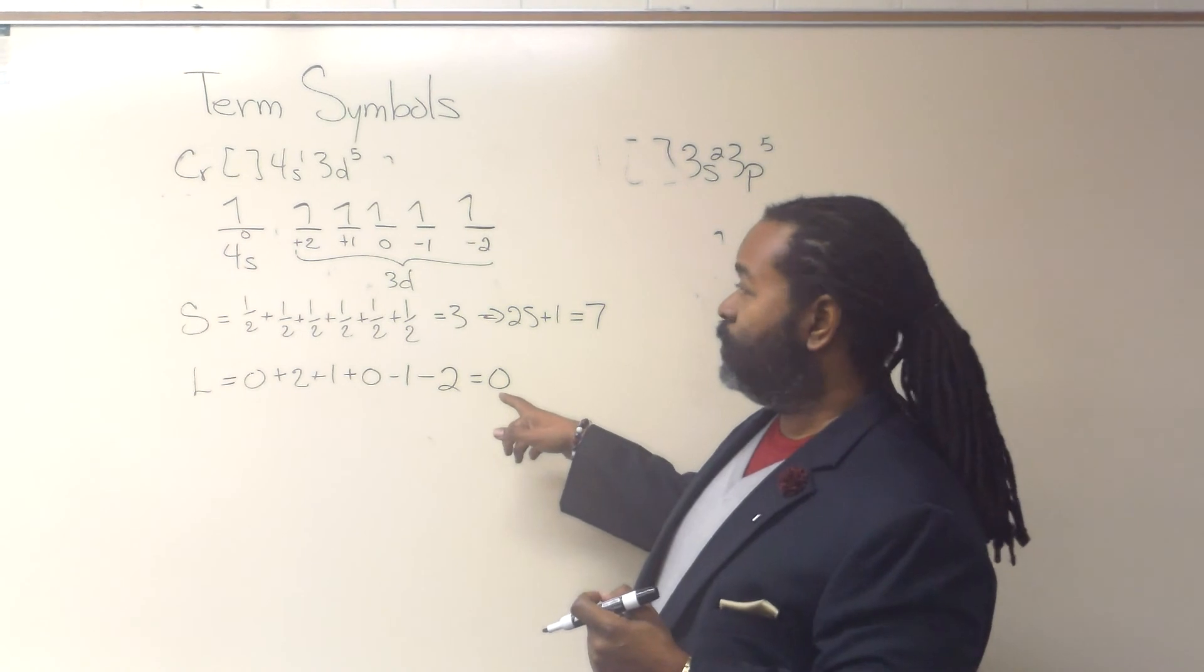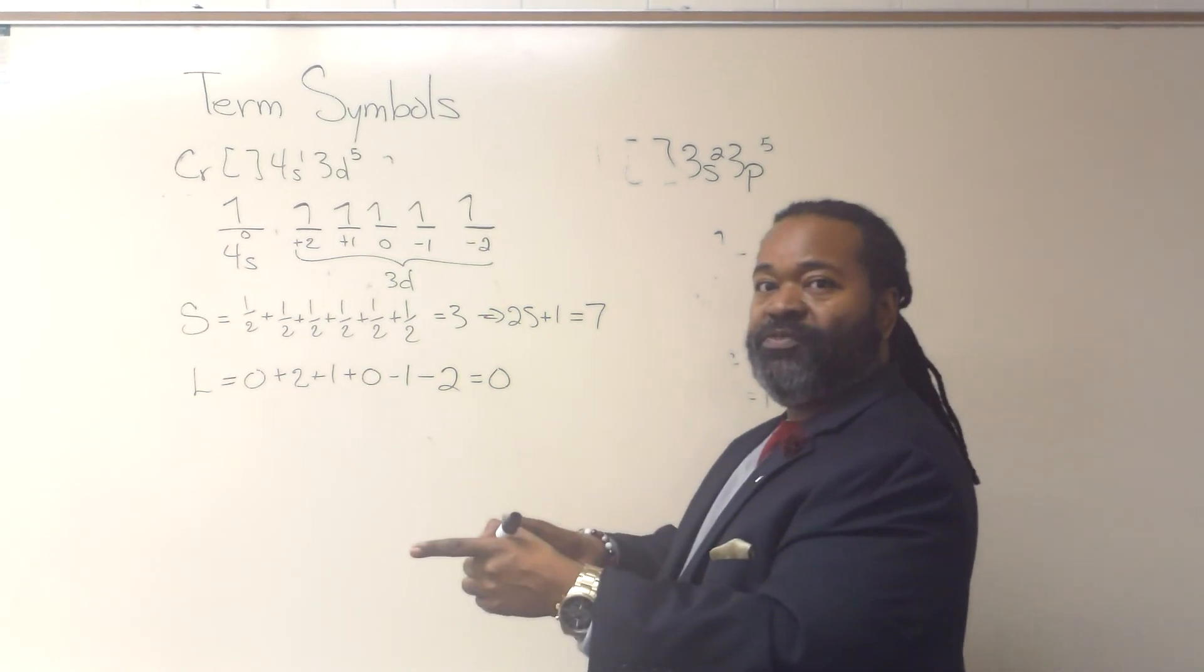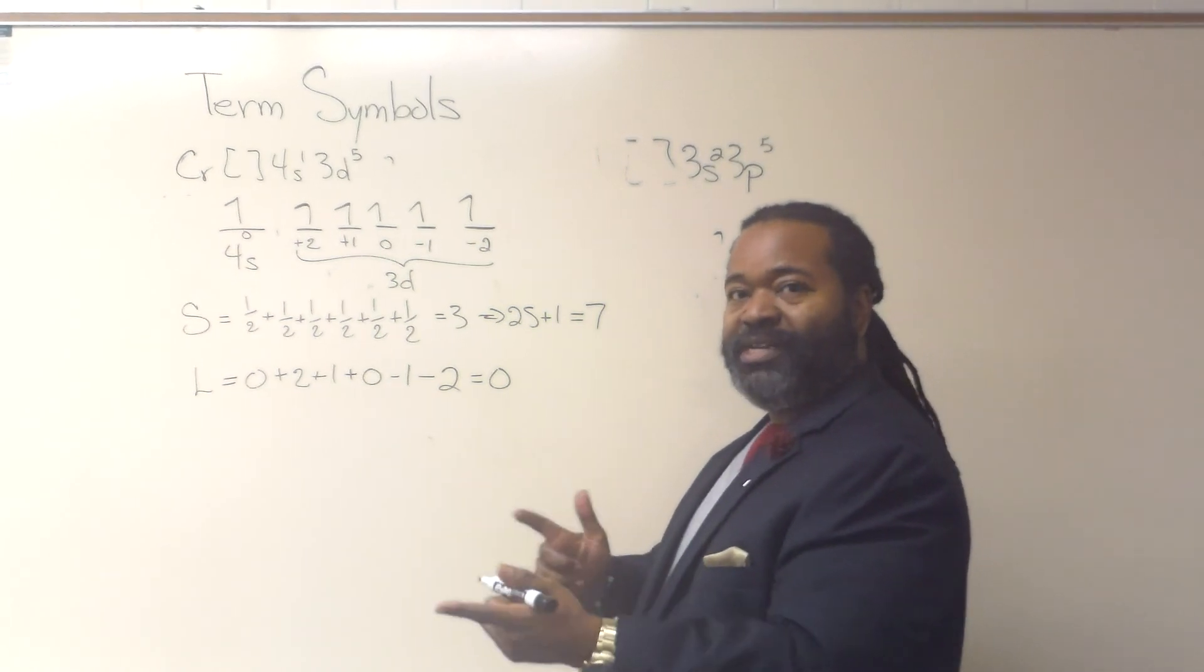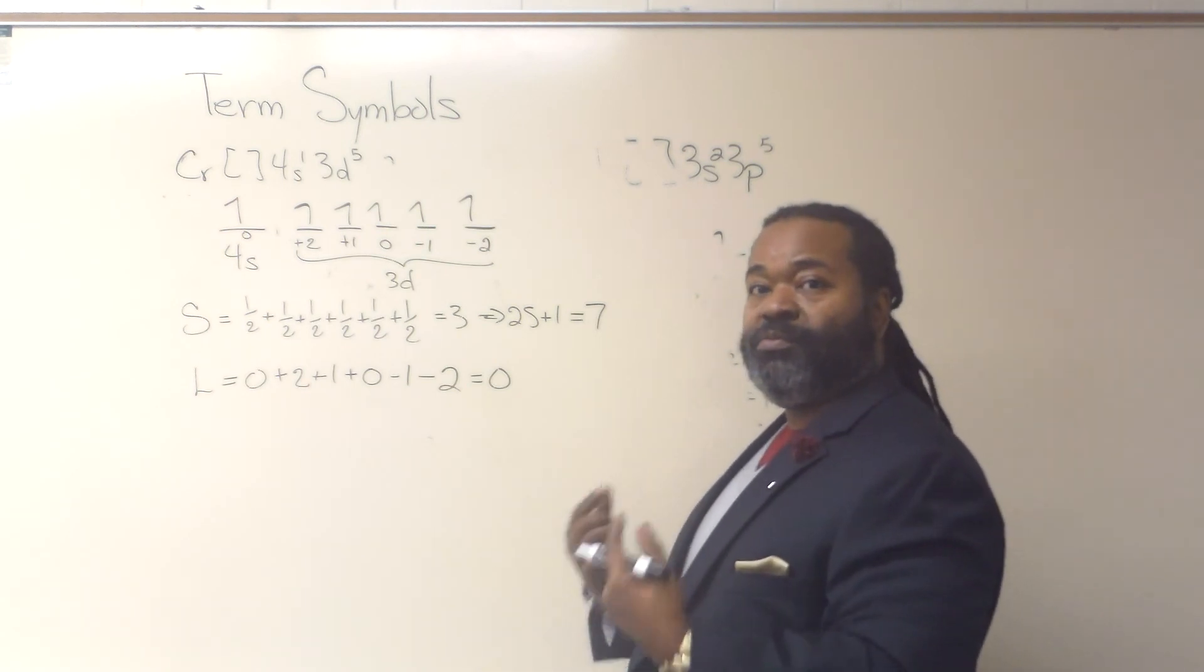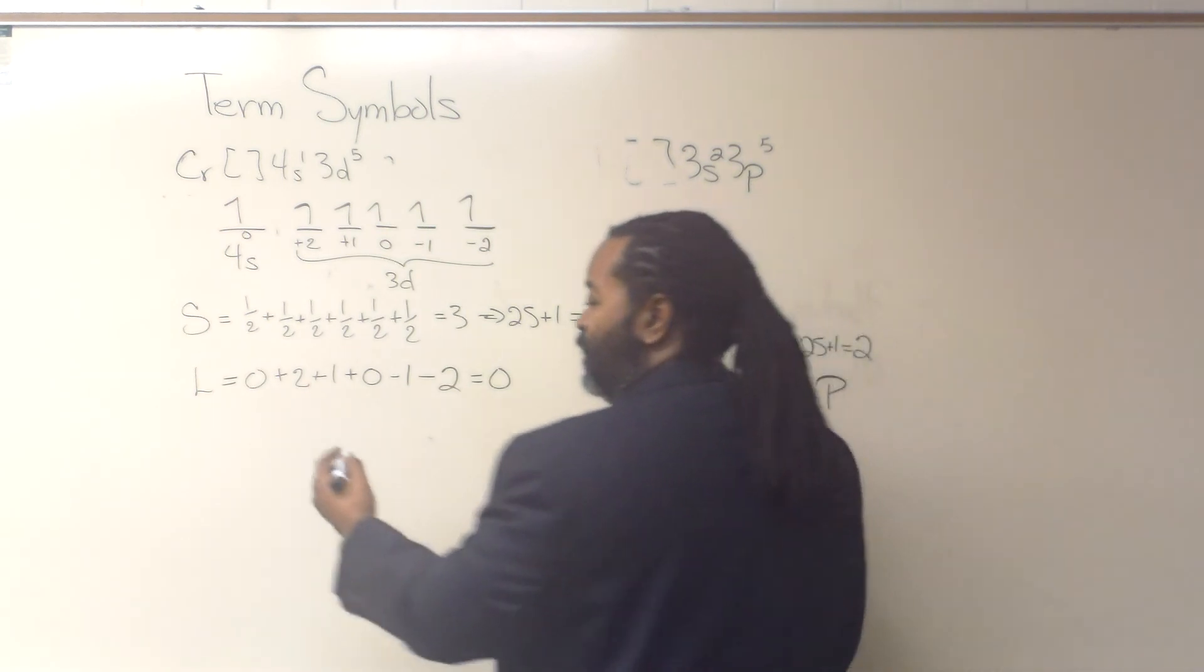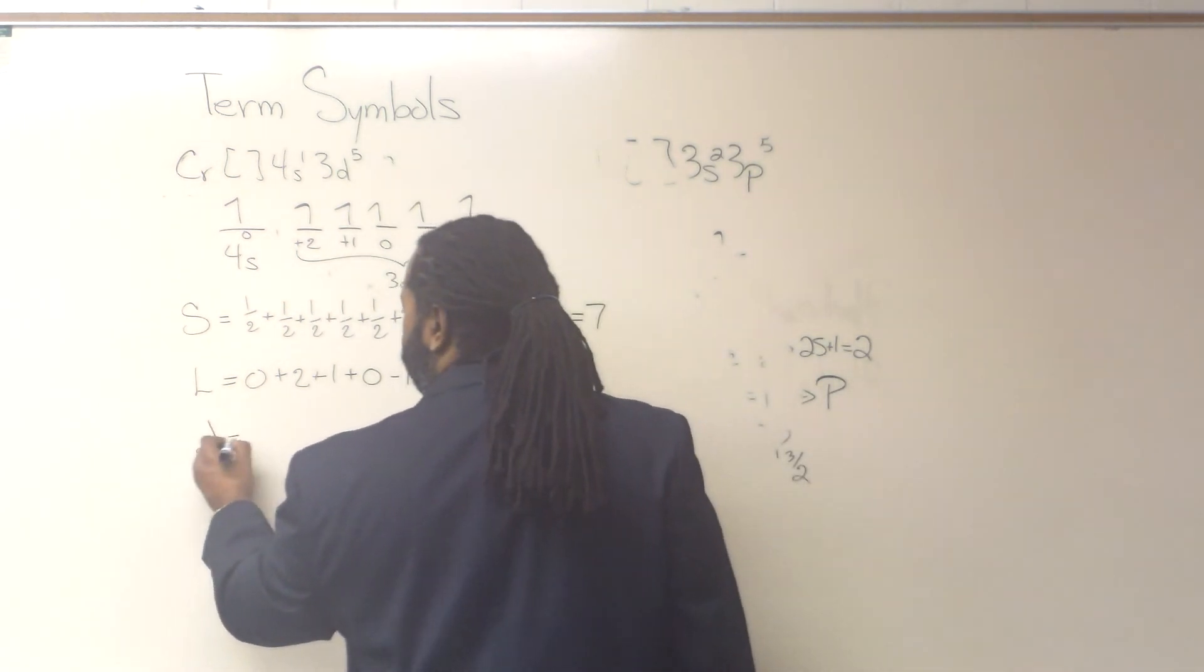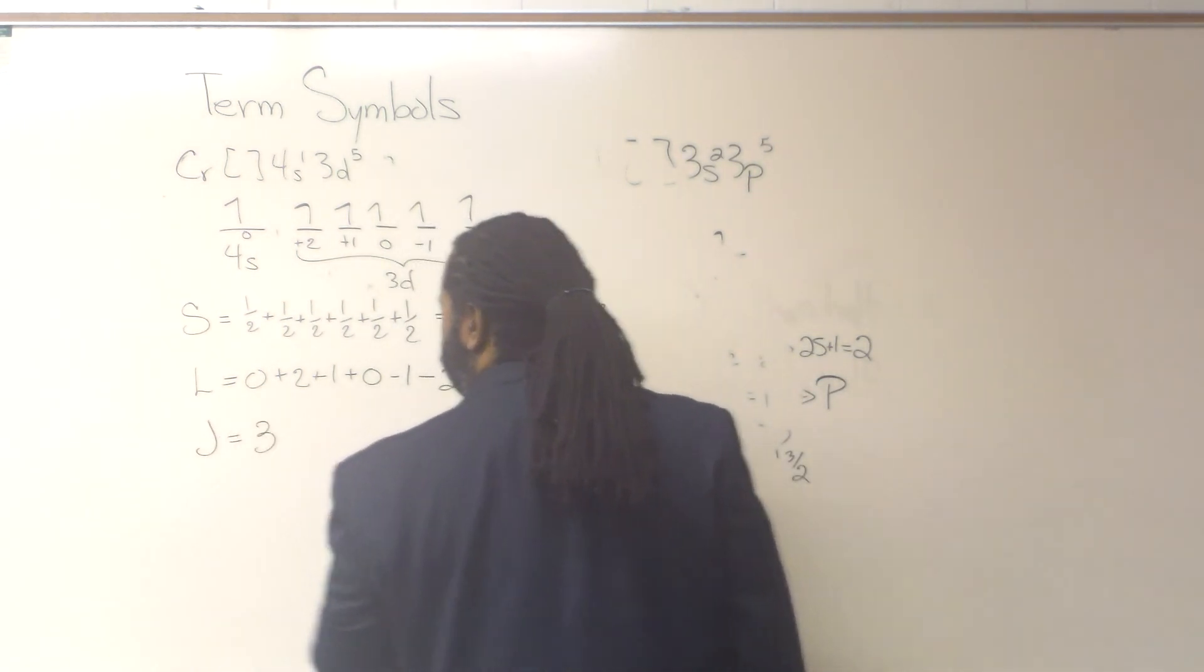Now, this is halfway full. If we were using the less than half full rule, we'd do 3 minus 0 and end up with 3. If we were doing the more than half full, we'd have 3 plus 0, which is still just 3. And that's the reason why, when it's half full, the J value is the same as the S.